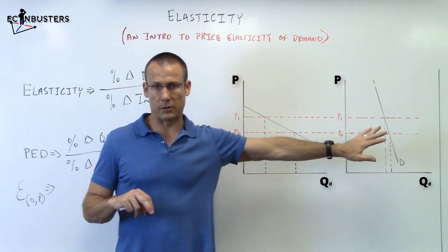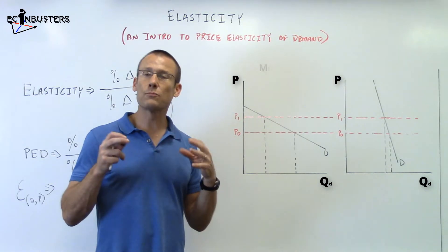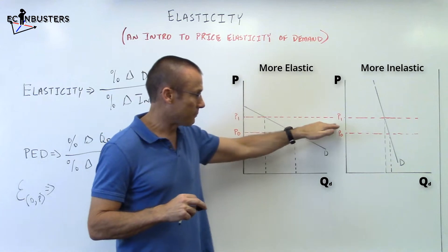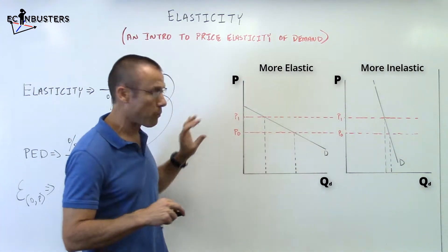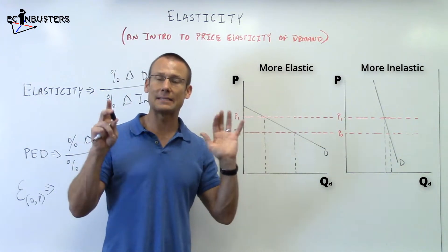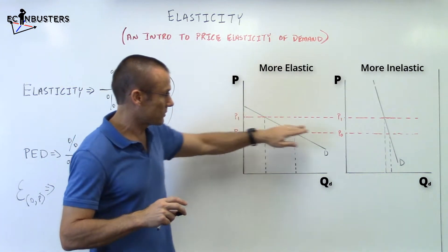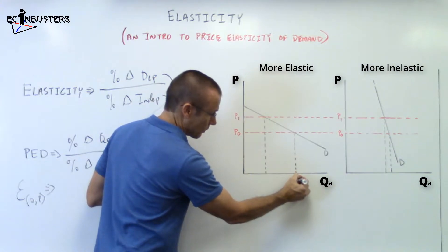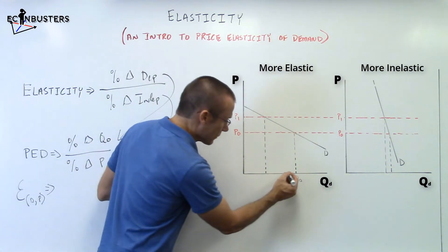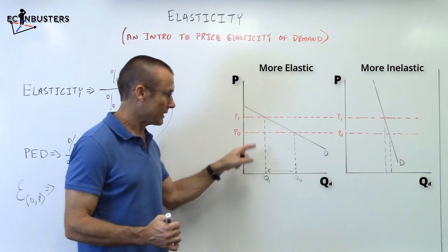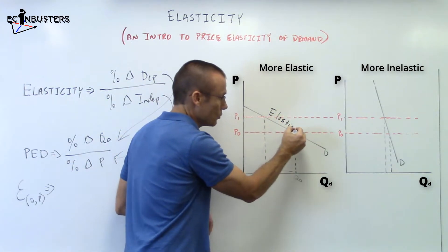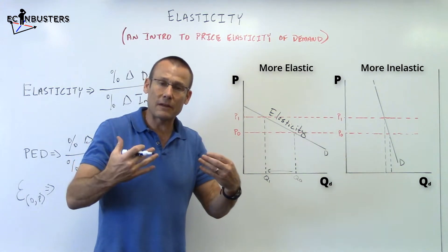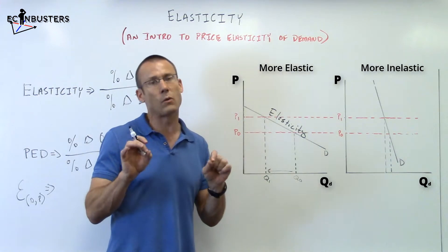Let's look at this graphically. I have two graphs here. The flatter demand curve is more elastic, and the steeper demand curve is more inelastic. I've placed price points exactly proportional to each other so the percent change in price is identical in both graphs. Looking at the flat curve: price goes up from P0 to P1, and quantity demanded changes significantly — Q1 is quite different from Q0. That flatter, more elastic curve shows QD responding significantly to the price change.